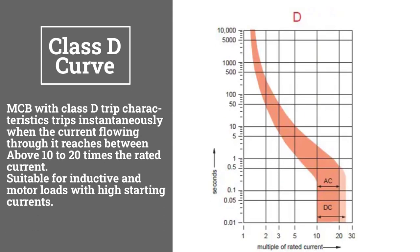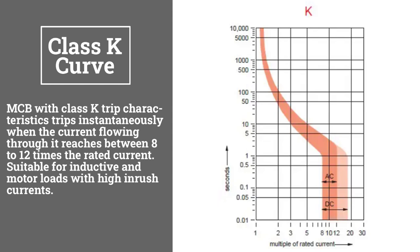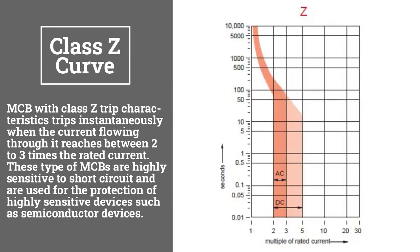Class D tripping current is above 10 to 20 times the rated current and it's suitable for inductive and motor loads with high starting currents. Class K tripping current is above 8 to 12 times the rated current. Class Z tripping current is above 2 to 3 times the rated current, so it's suitable for highly sensitive devices such as semiconductor devices.